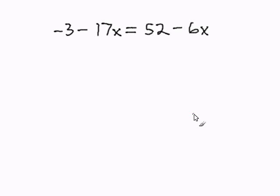Solving multi-step equations with variables on both sides of the equal sign. In this problem, in order to solve for x, I must get all the variables on one side and all the numbers on the other side.